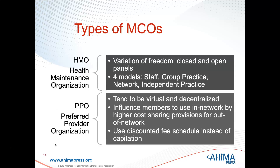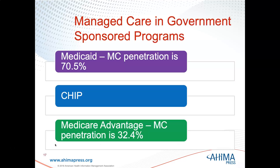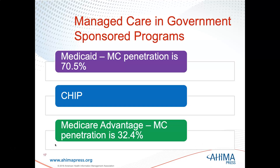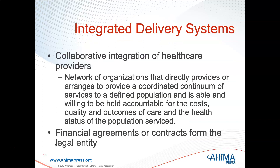Slides 14 through 16 on types of managed care organizations — make sure you study those well. Hint hint. Managed care and government-sponsored programs: we've talked about Medicaid, CHIP, and Medicare Advantage. The slides give you penetration percentages for Medicaid and Medicare; there isn't one listed for CHIP, which would be interesting to research.